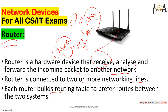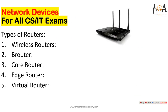A router is connected to two or more networking lines. Each router builds a routing table to determine preferred routes between two systems. The routing table maintains the path of networks — for example, which networking lines are nearest, which are cheapest in terms of cost to send data. All such calculations are done under the routing table. So it is a hardware device which receives, analyzes and forwards incoming data packets from one networking line to another.